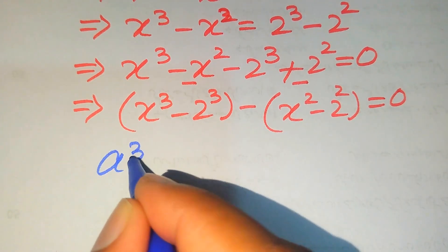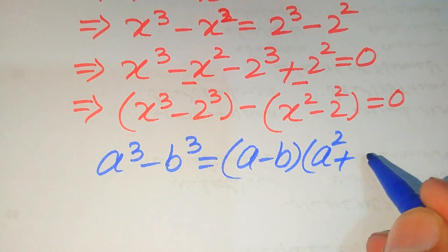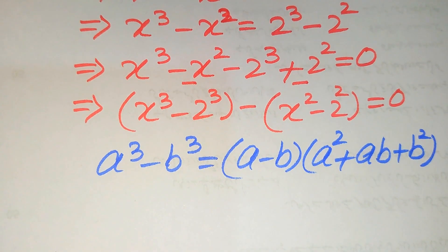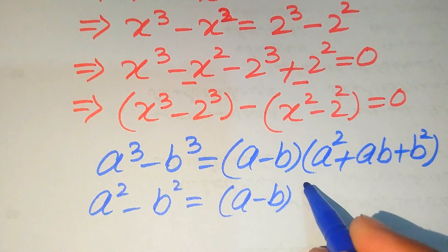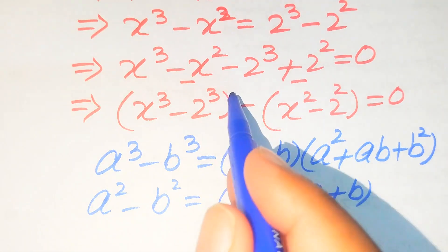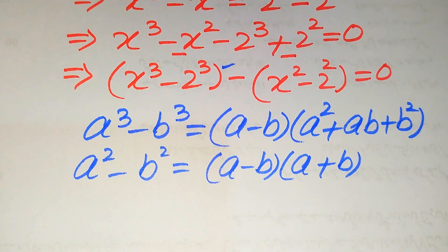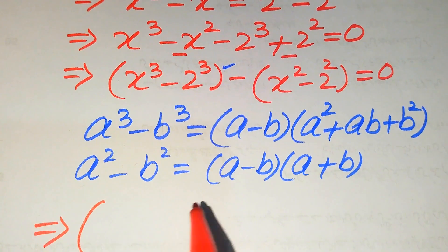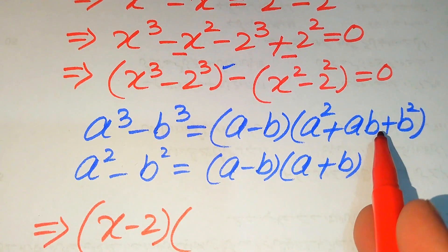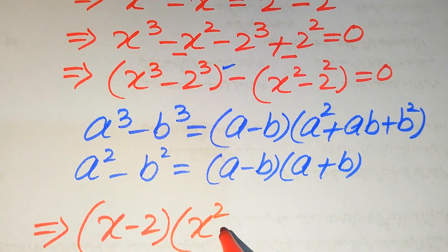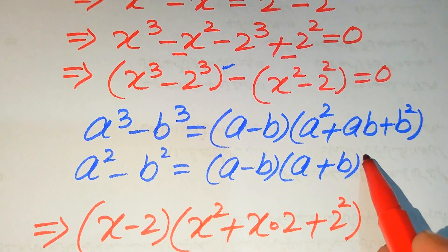Now we apply two algebraic formulas. On the first term we apply the cubic formula: a cubed minus b cubed equals (a minus b)(a squared plus ab plus b squared). So the first term is written as (x minus 2) times (x squared plus 2x plus 2 squared).